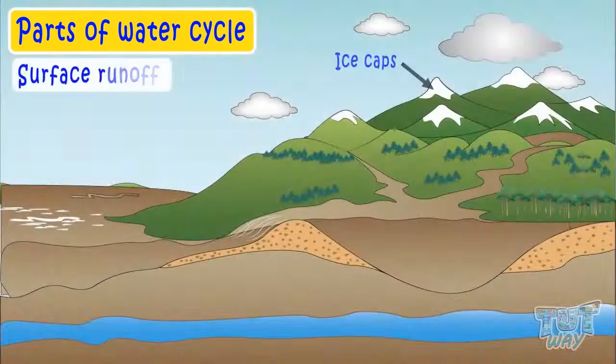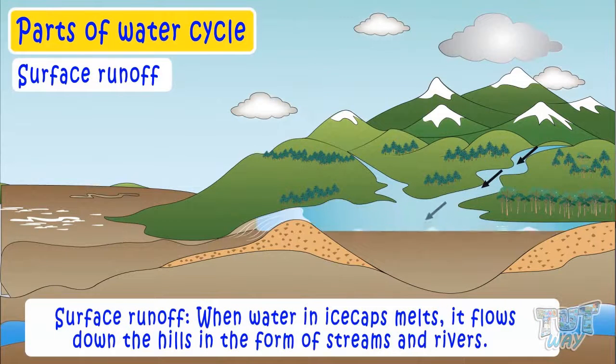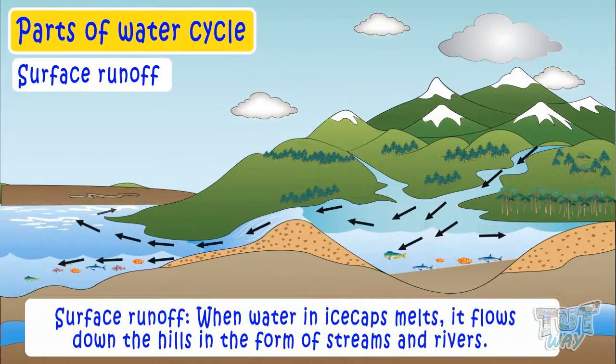Surface runoff. When water in ice caps melts, it flows down the hills in the form of streams and rivers. It is called surface runoff.